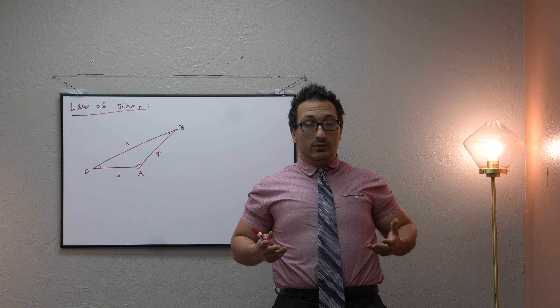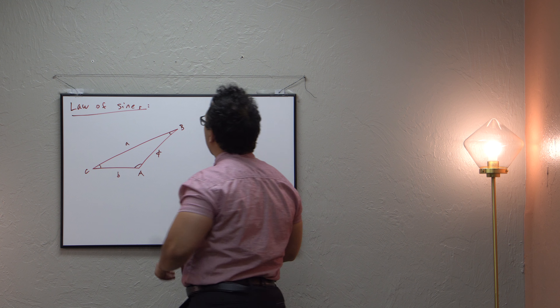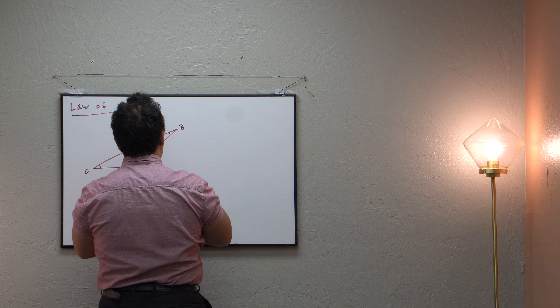So we want to establish a relationship between the leg lengths and the angles of general triangles — not necessarily only right triangles where we have sine, cosine, tangent, and all these other trigonometric functions. What is the relationship between these leg lengths and these angles in a non-right triangle? A general triangle. And so that is what the law of sines is.